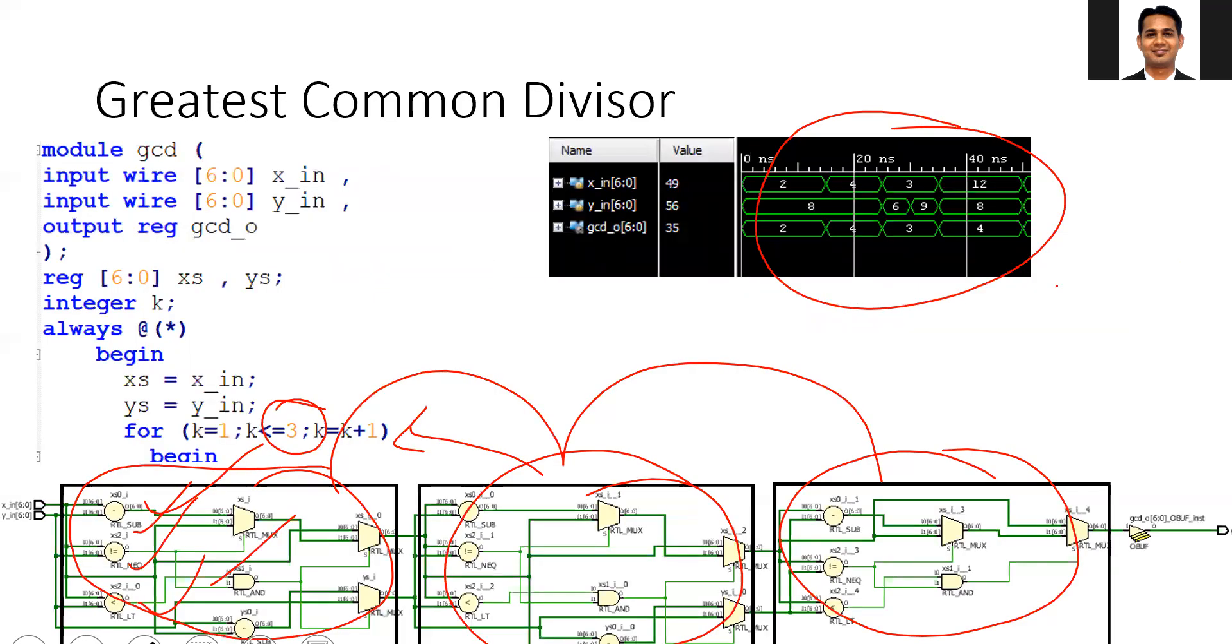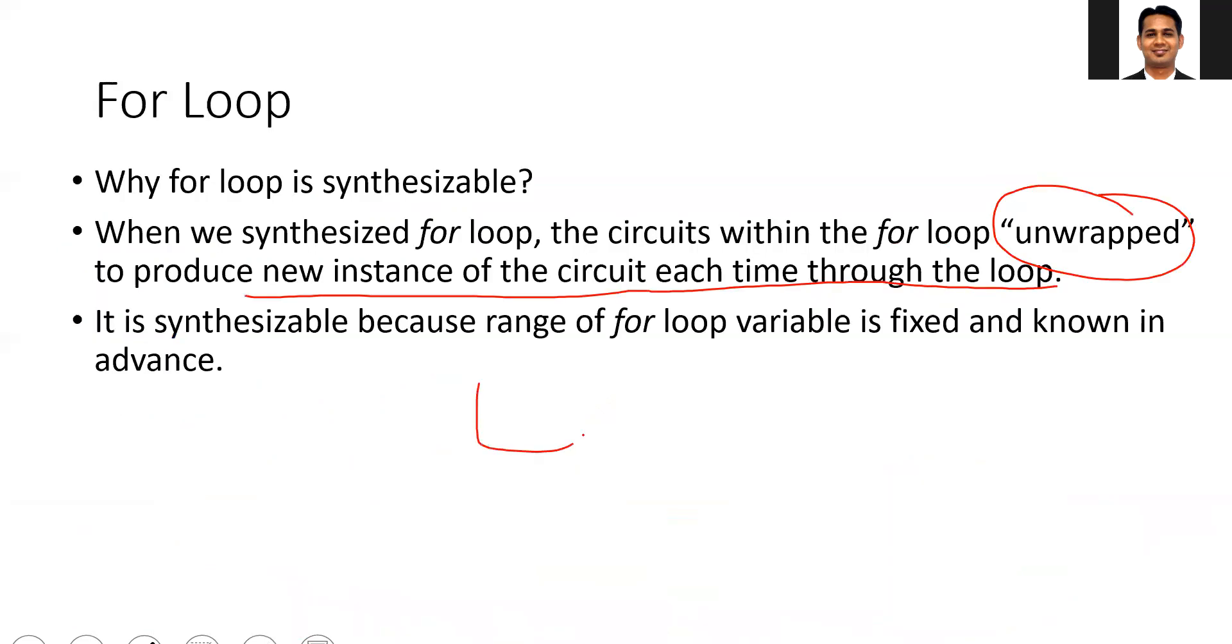This is happening because you are implementing a combinational circuit - your output depends on the input. You are creating three blocks of hardware for three iterations of the for loop, labeled iteration one, two, three, then you get the output.